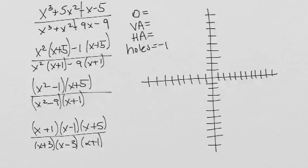Looking at our identified features, we know that there is a hole at negative 1 because there is an x plus 1 in the numerator and in the denominator. When we go through and want to look at our zeros, we know that there is a zero at 1 and negative 5 because those are the roots of our numerator.